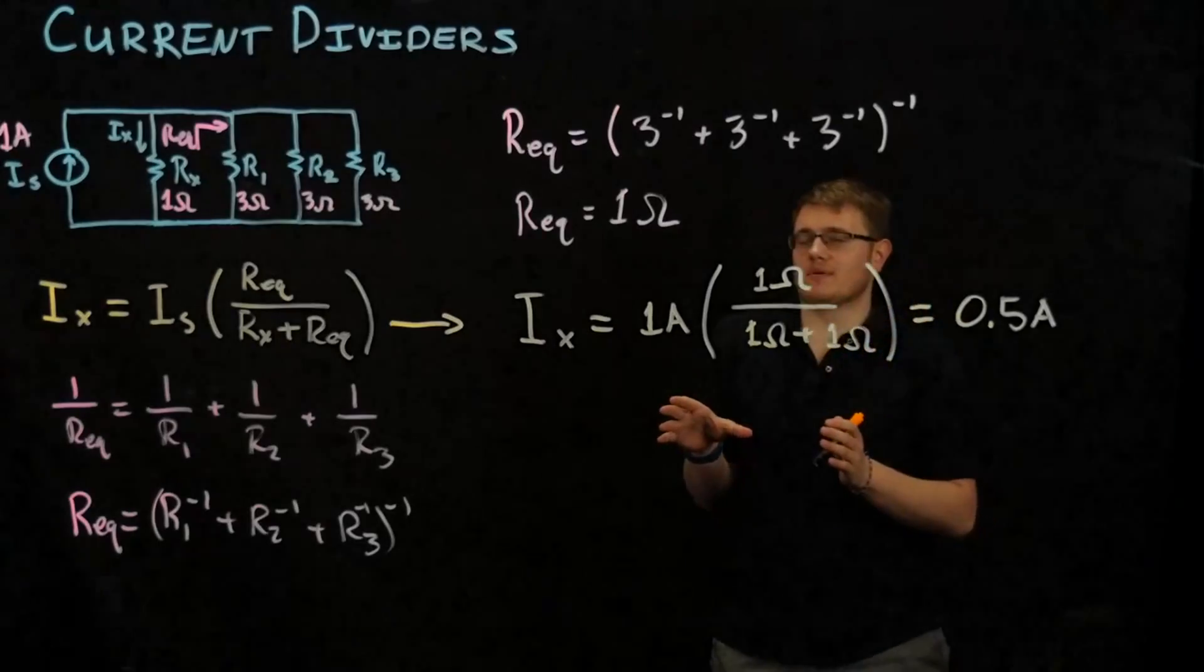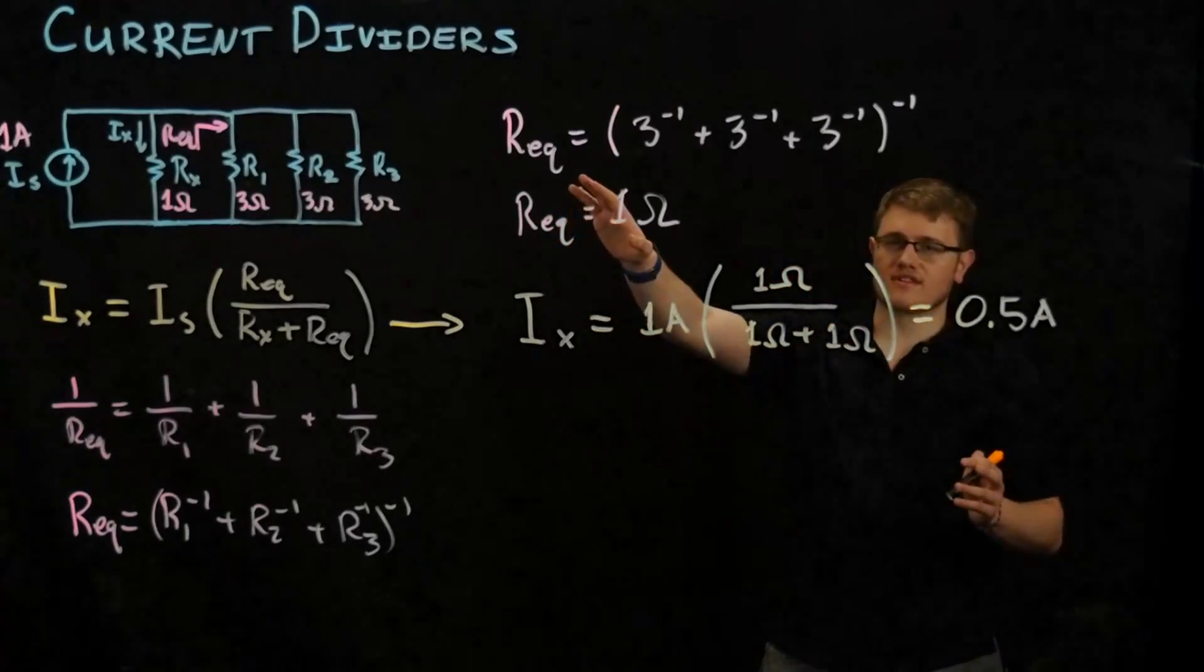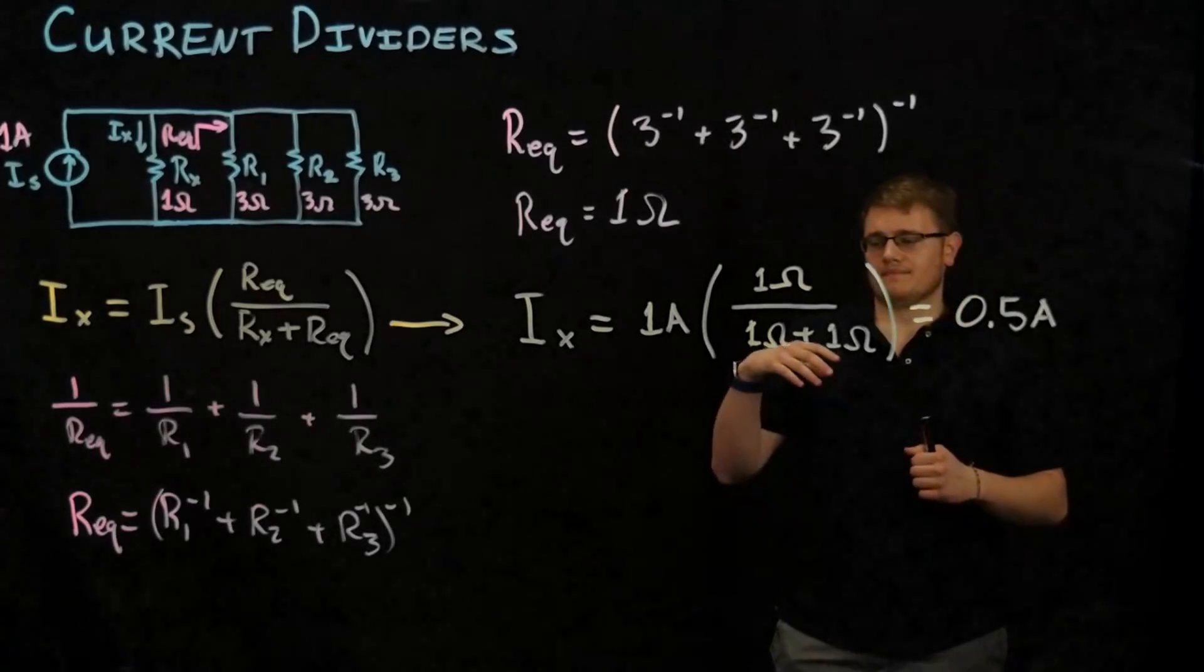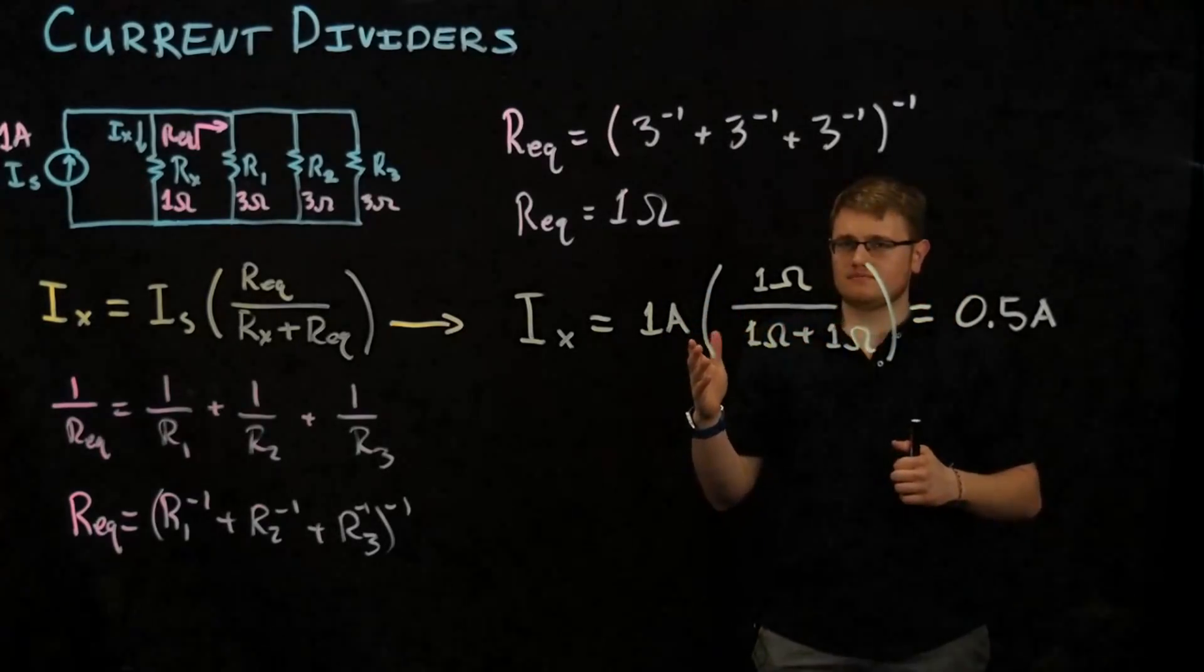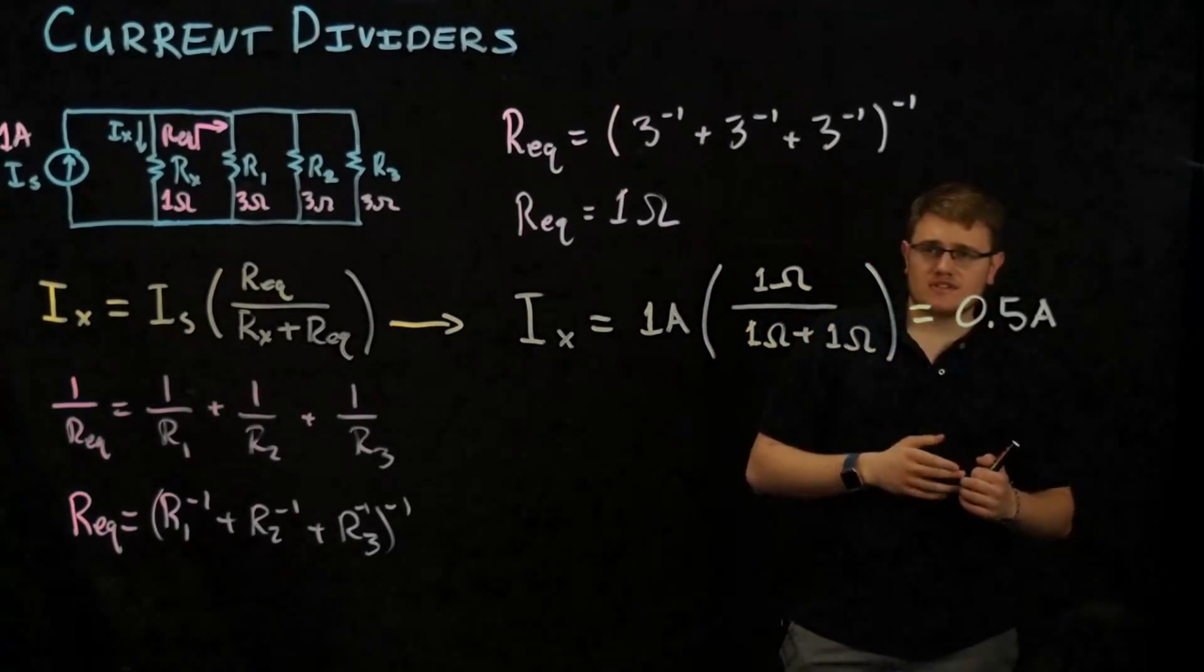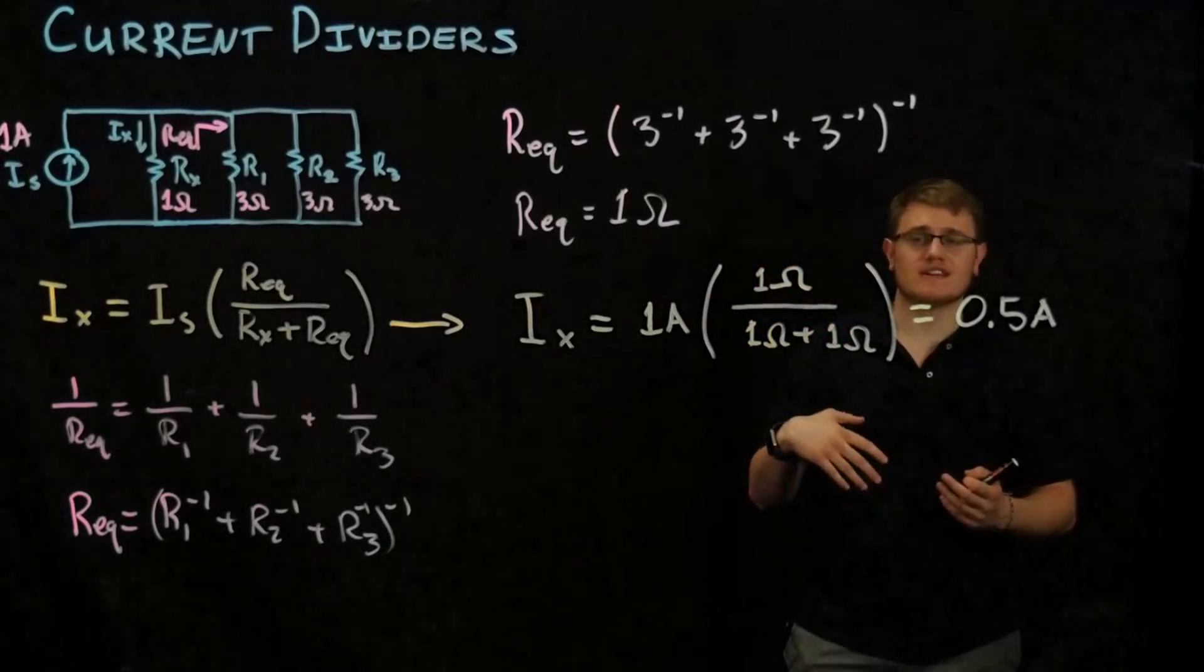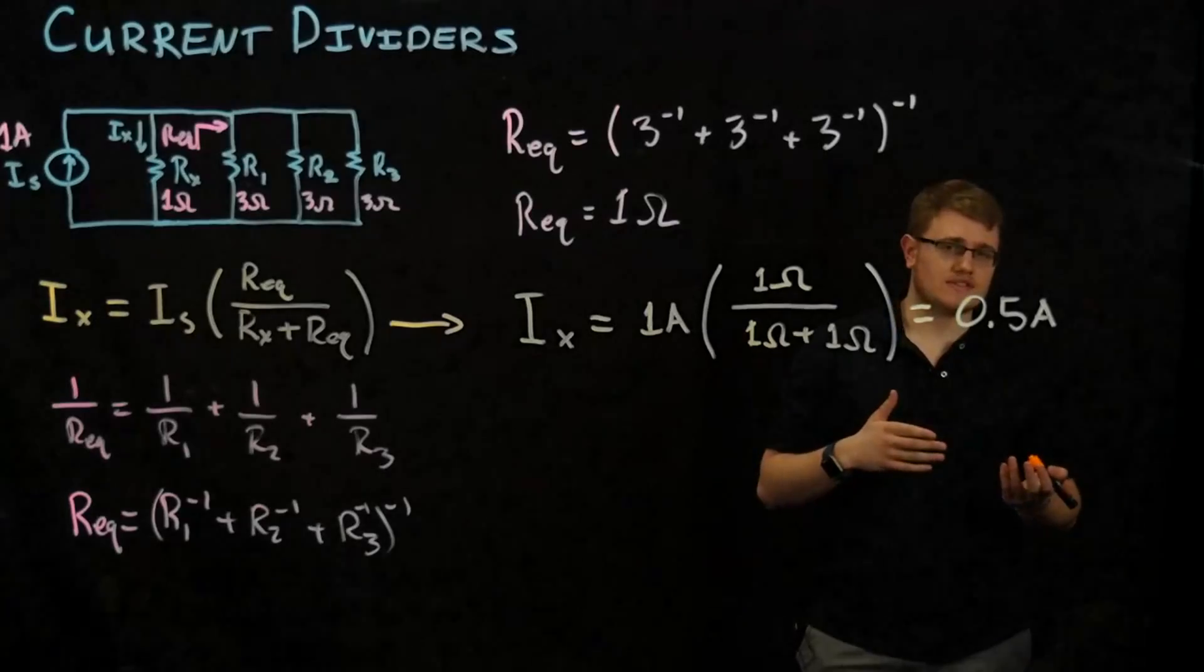Now you might be thinking, okay, but when am I ever going to see a current source in a circuit? Because you might be early on in circuits, you've never seen current sources before. Sometimes you can see current sources, or if you have a voltage source and you see that this could be used, you can turn it into a current source. And that's Norton's theorem. But that's another video.